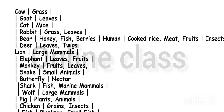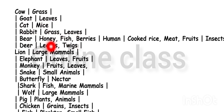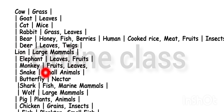We are going to take a look at the table again. Cow eats grass, goat eats leaves, cat eats mice, rabbit eats grass and leaves, bear eats honey and fish, deer, ticks, lion eats large mammals, elephant eats leaves and fruits, monkey eats fruits and leaves.